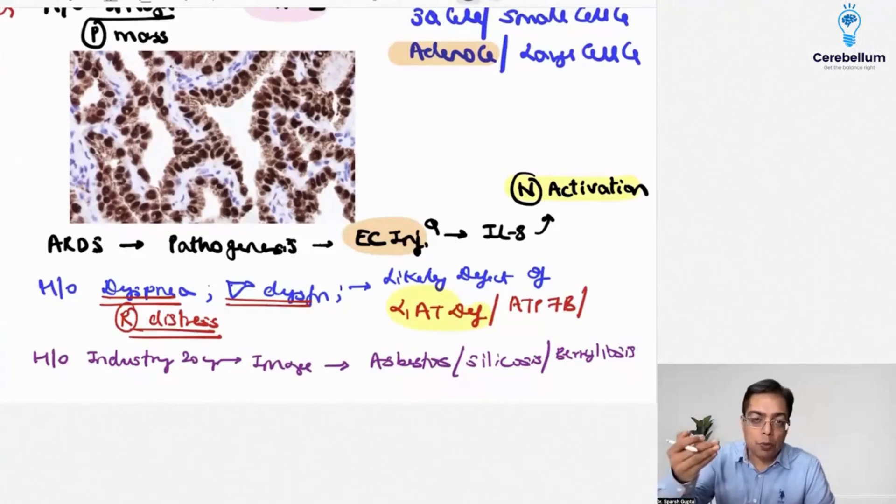Endothelial cell injury is responsible for release of cytokines like interleukin-8, TNF-alpha, which are responsible for causing activation of neutrophils. These neutrophils subsequently cause more damage. There is deposition of the fibrin layer, which is responsible for the classical fibrin membrane in such patients.